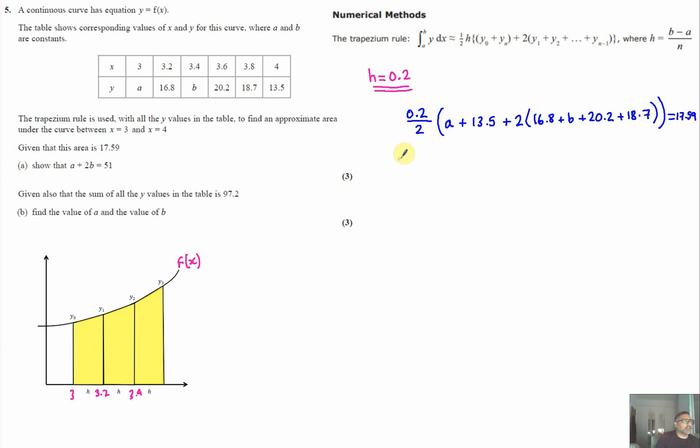Simplifying, 0.2 over 2 is 0.1. We have a plus 13.5 plus 2 times the remaining values, which gives us a plus 2b plus the sum of constants, equal to 17.59.